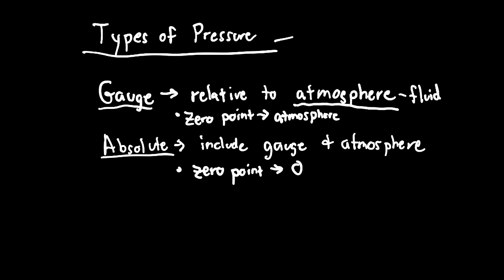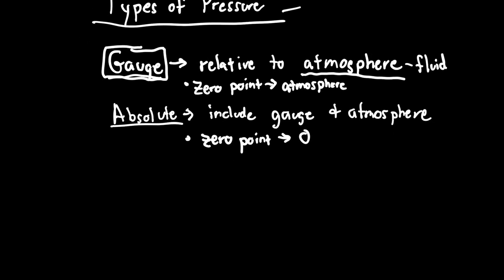In gauge pressure, we have a zero point. Our point of reference is the atmosphere, wherever we're sitting. Whereas absolute pressure, the zero point is literally zero actual pressure. Most of the pressures you're going to talk about are gauge pressure. The most common way we measure these is something called a manometer.